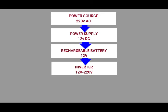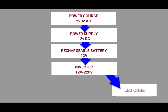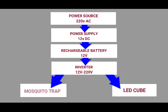There are two possible options for the users to use the device. Users can switch to option 1, where they can use the LED cube only, or switch to option 2, where they can use the mosquito trap only.